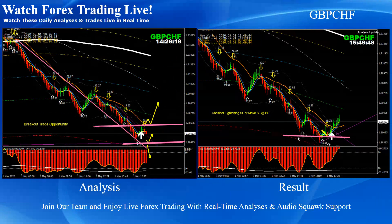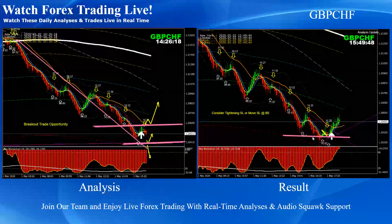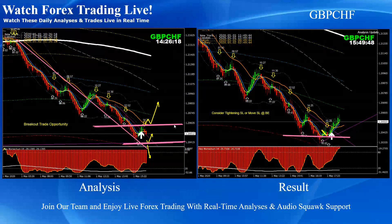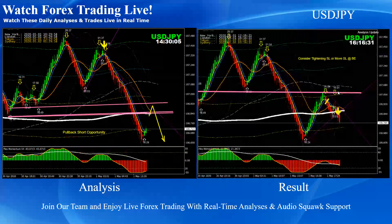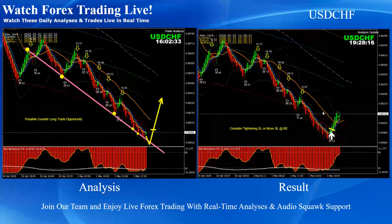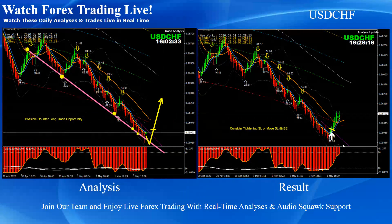GBP/CHF — this was the counter long trade. We were watching on the four-hour chart; price hit a major support level and as soon as mentioned on the analysis, the price retested this level again — look for long. We had another counter long opportunity on GBP/CHF. USD/JPY — pretty straightforward pullback short trade. USD/CHF — as mentioned on the analysis, look for pullback if you see any red candle, which we announced through live audio commentary. Price nicely hit the first target which is the resistance level.